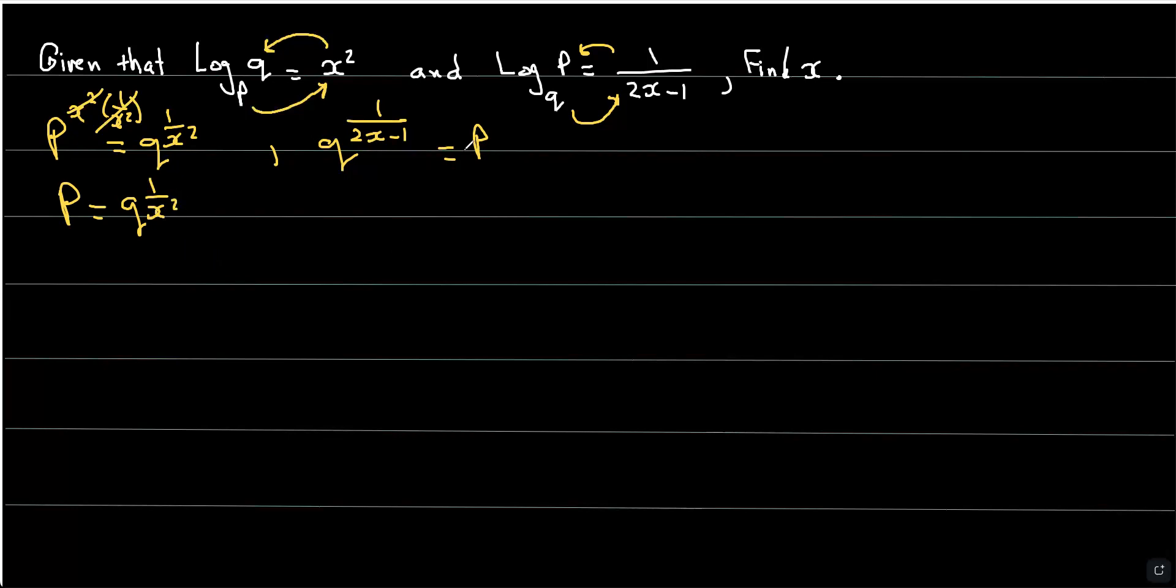Now, I have two equations here, and both of them are P equals. So I'm going to take this and substitute it for the P right there. So I'm going to end up having Q to the power of 1 over 2x minus 1 equals Q to the power of 1 over x squared. Since the bases are the same, I can cancel the Qs, and I end up with 1 over 2x minus 1 equals 1 over x squared.